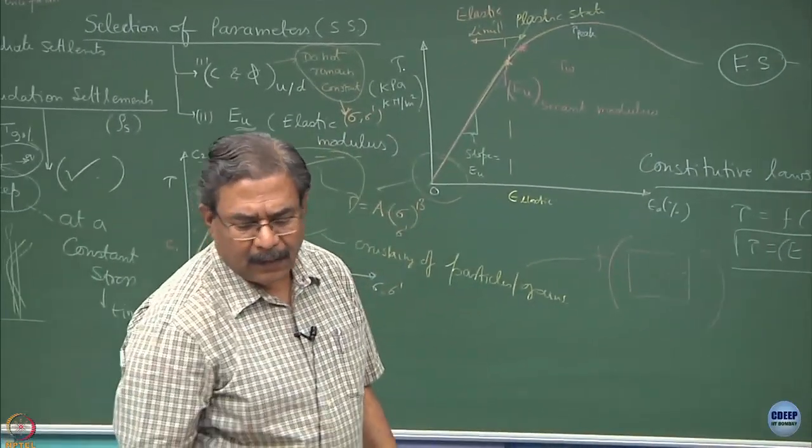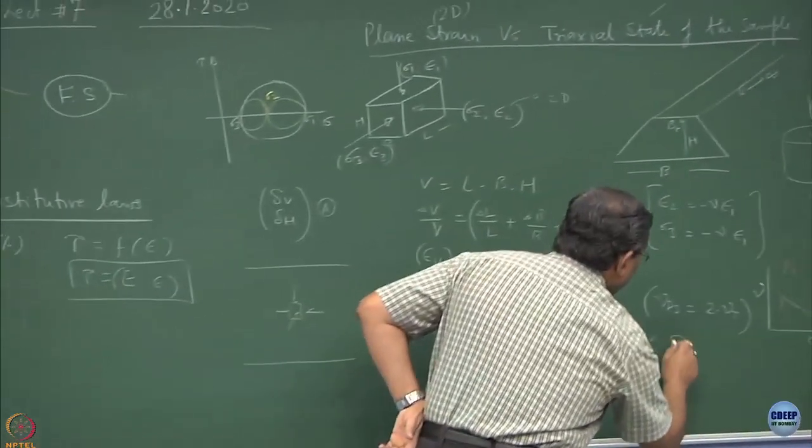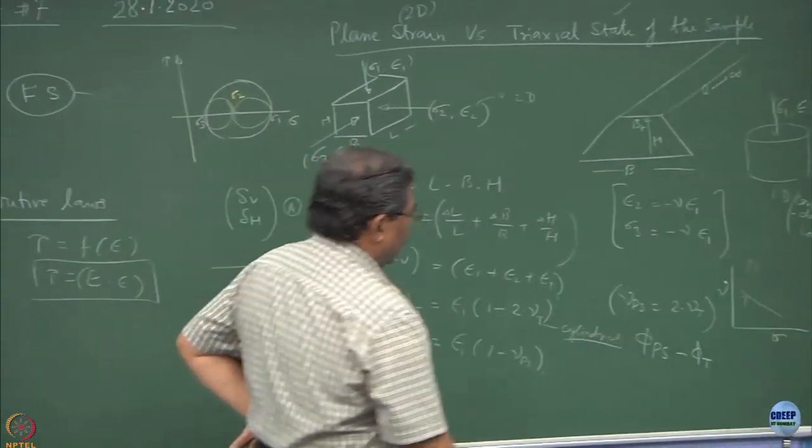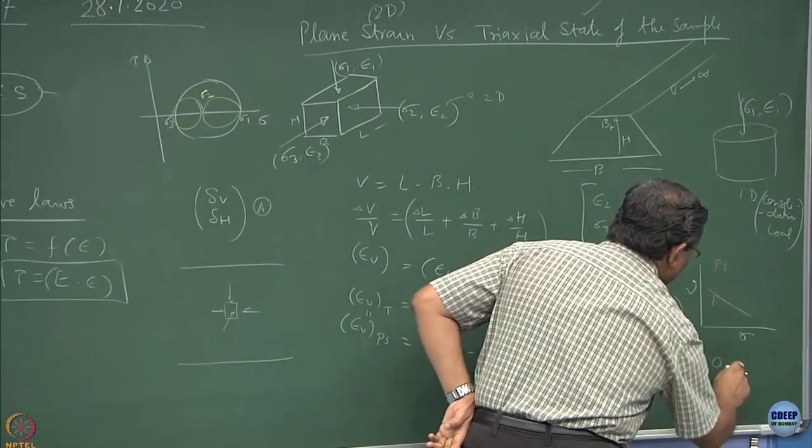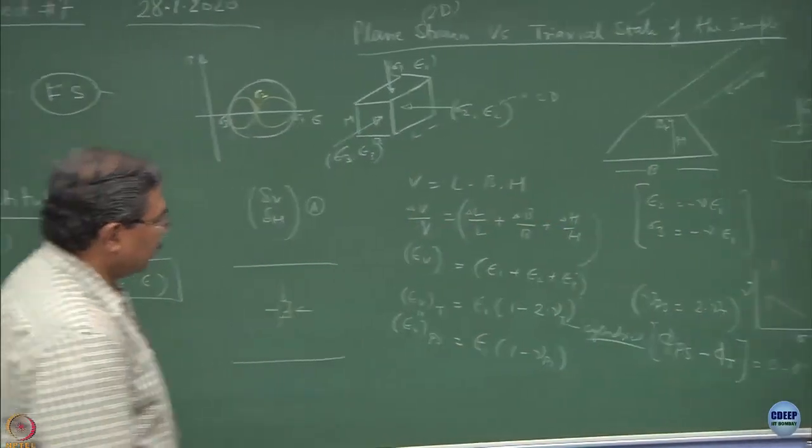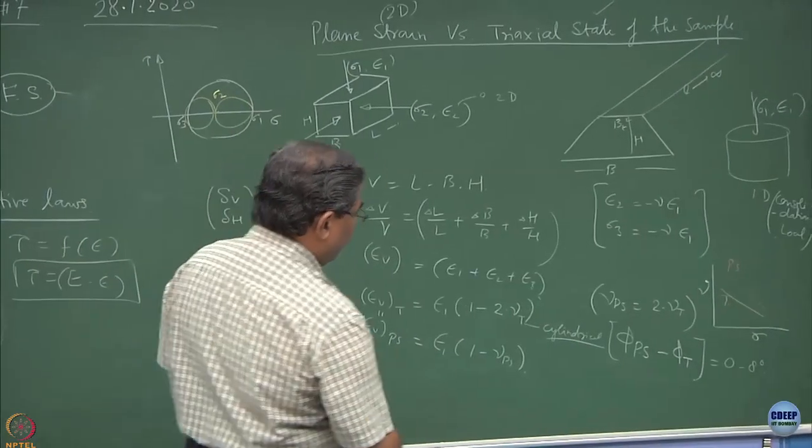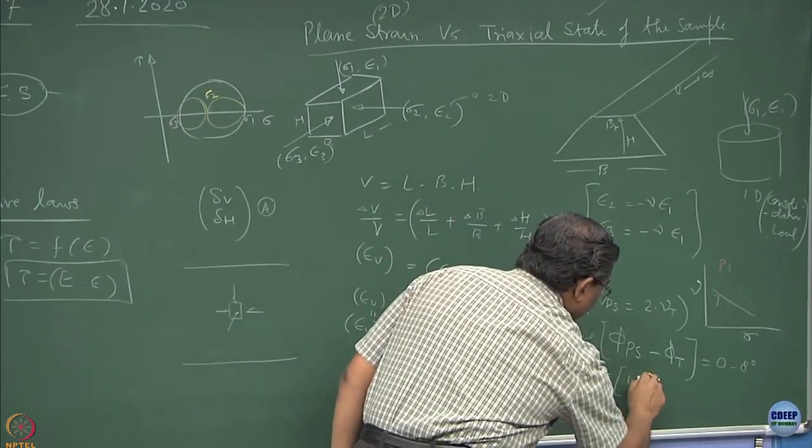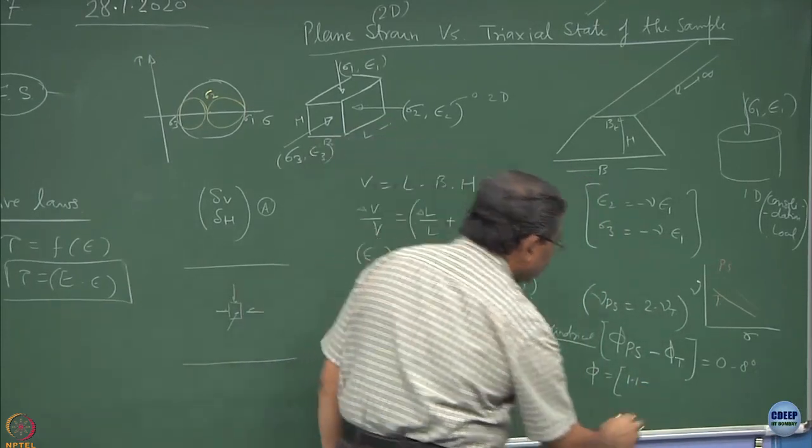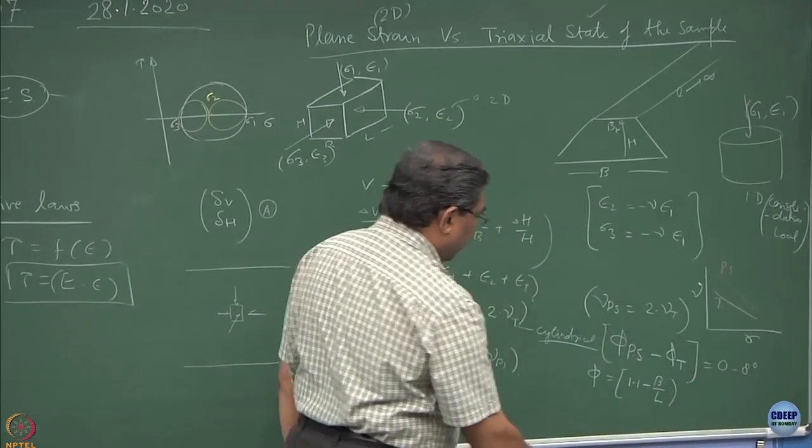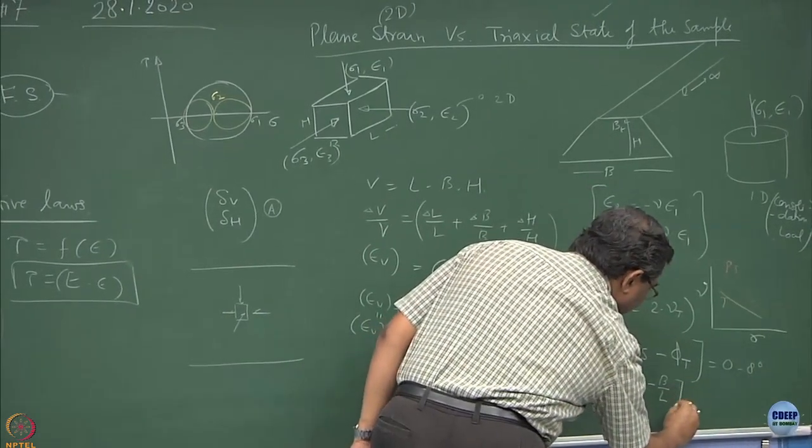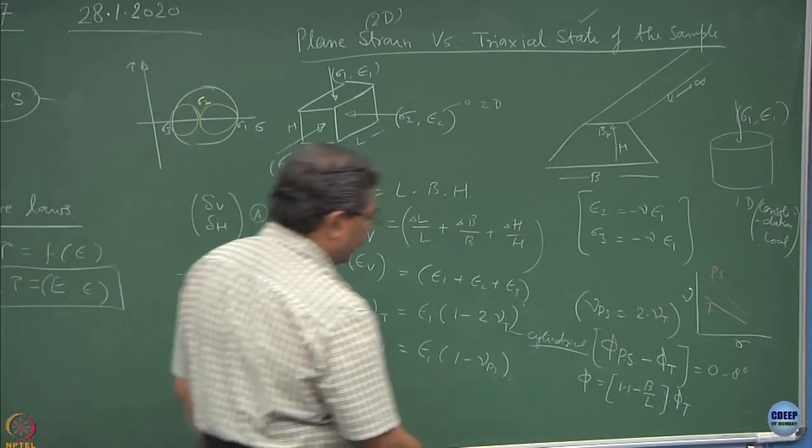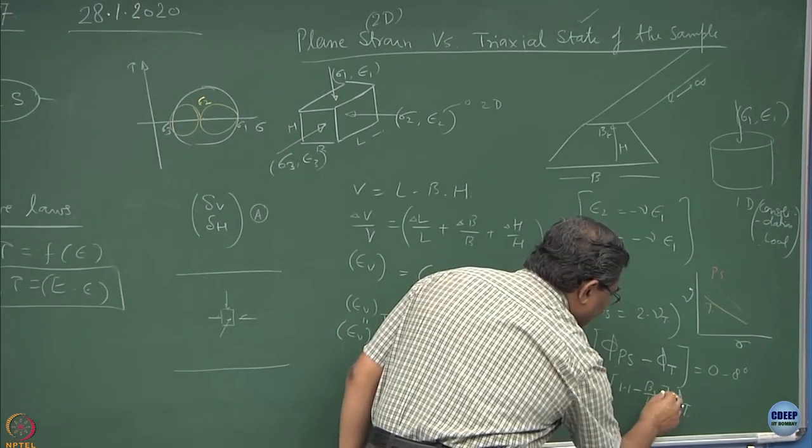Now there are few relationships which you can write. Phi of plane strain minus phi of triaxial, the friction angle which you get is approximately 0 to 8 degree. And there is another relationship which has been given: phi plane strain equal to 1.1 minus B upon L multiplied by phi triaxial, multiplied by 1 upon 10.